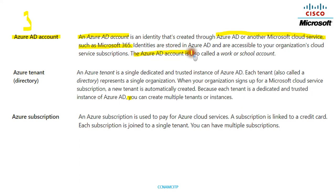The next concept is Azure Tenant or Directory. An Azure tenant is a single, dedicated, and trusted instance of Azure AD. Each tenant — also called a directory — represents a single organization. When your organization signs up for a Microsoft cloud service subscription, a new tenant is automatically created. Because each tenant is dedicated and trusted, you can create multiple tenant instances.